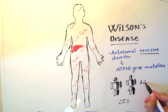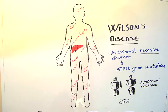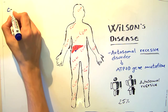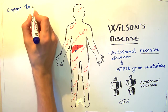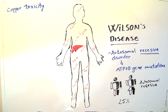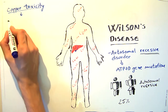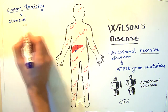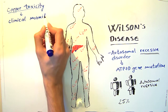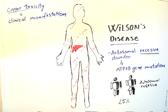But only 25% of the children will have both alleles mutated. As we said earlier, there is a problem with the transportation of copper, so we will have copper accumulation, or copper toxicity. Therefore, the clinical signs are as a result of that accumulation.